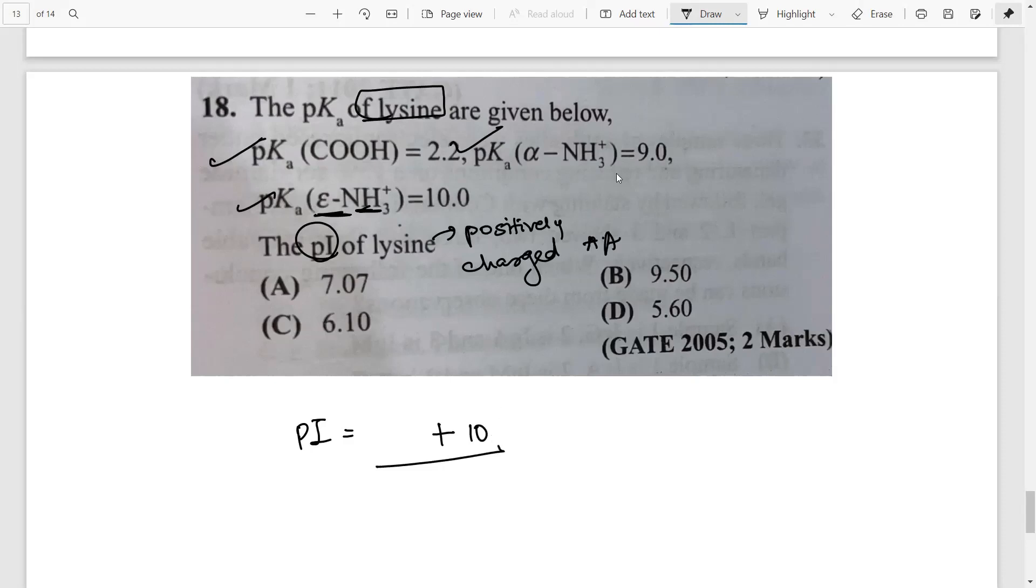So definitely this is the pKR so you will take this value. Now the question is whether we have to take this value or this value. So obviously you are going to take this one so then that comes out to be 9 plus 10 by 2 that is 19 by 2 and that is 9.5. So this is the simple answer positively charged. So you will take these two groups.